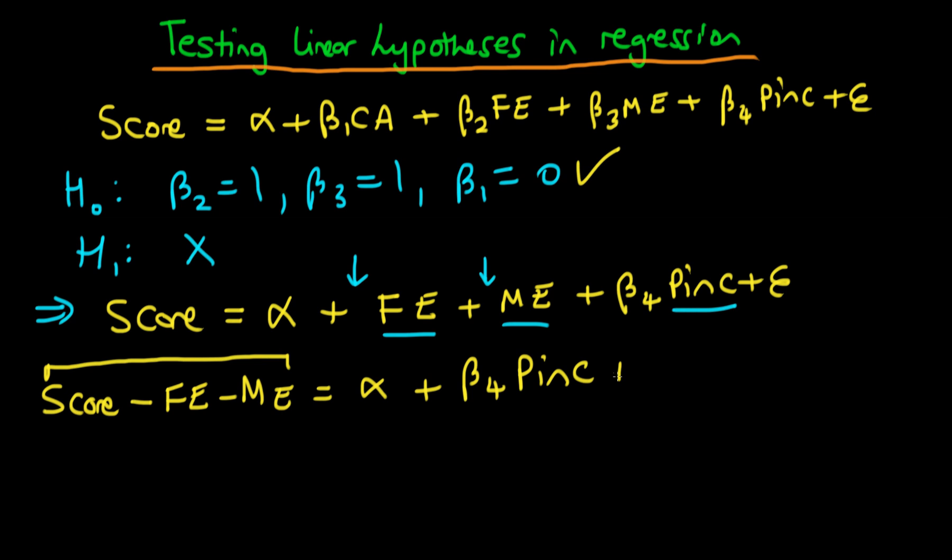So we would just have two independent variables in this circumstance here and then what we would do is we would just do a standard F-test. So the F-test we would do here would just be exactly the same form as we had before. We compare the sum of square residuals for our restricted model with the sum of square residuals for the unrestricted model, and then we divide that through by the sum of square residuals for our unrestricted model.